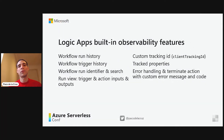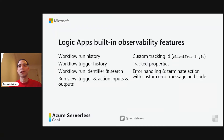Logic Apps provides some built-in observability features, and this is true even for Consumption. Every time you run a workflow, you would see it listed in the workflow run history, and there is also a trigger history. In the run history and trigger history, you have a run identifier and you can search using that run identifier. For stateful workflows, you can see the trigger inputs and outputs, and also for every action you can see the inputs and outputs that you can inspect in case you need to troubleshoot the execution of your workflow.